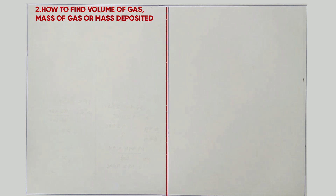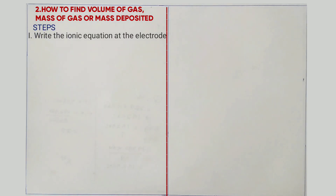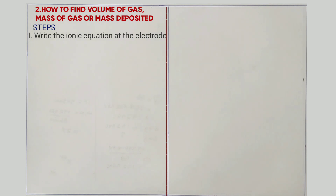Number two: we want to look at how to find either volume of gas produced, mass of gas produced, or mass deposited. Now step one here is to write the ionic equation. The aim of writing the ionic equation is to know the number of electrons lost or gained. If you lose 4 electrons, that is the same as 4 Faradays. If you gain 2 electrons, that is the same as 2 Faradays. And 1 Faraday is equal to 96,500 C.